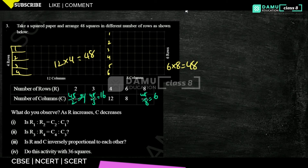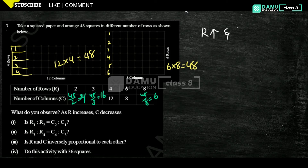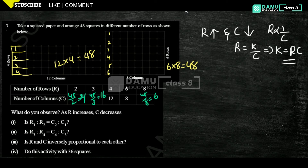If rows are increasing then columns are decreasing. So rows are increasing then columns are decreasing. That is, R is inversely proportional to columns. You can write R equals K by C, then constant R times C. Rows into columns — they are in inverse proportion. So 2·24=48, 3·16=48, 4·12=48, 6·8=48, 8·6=48.